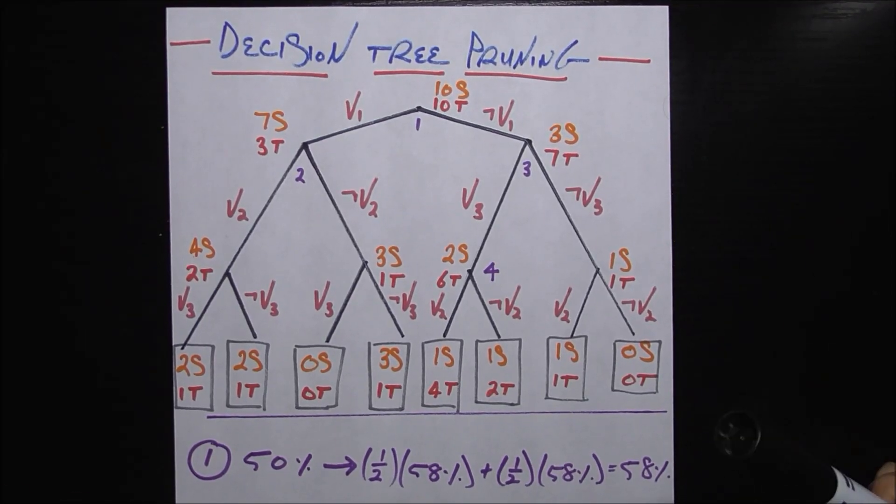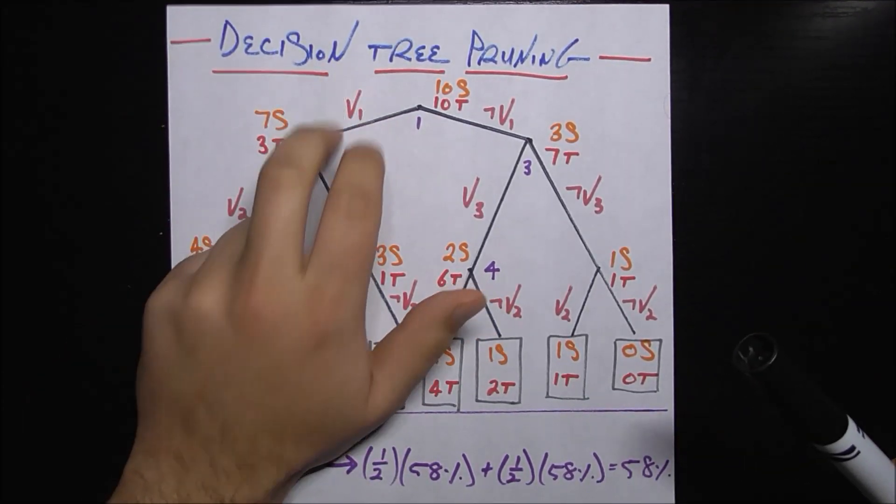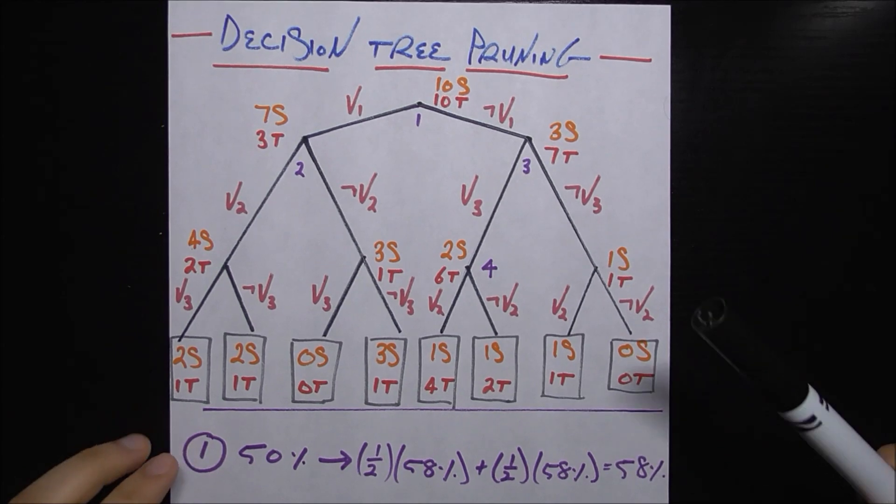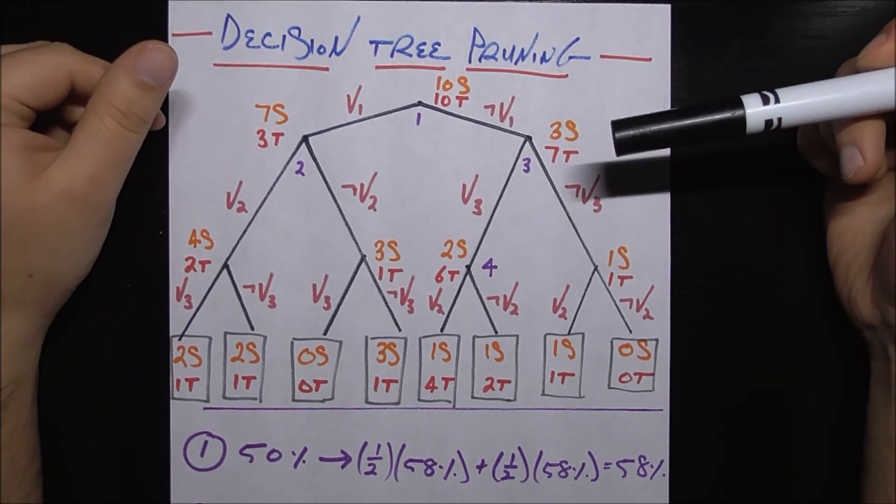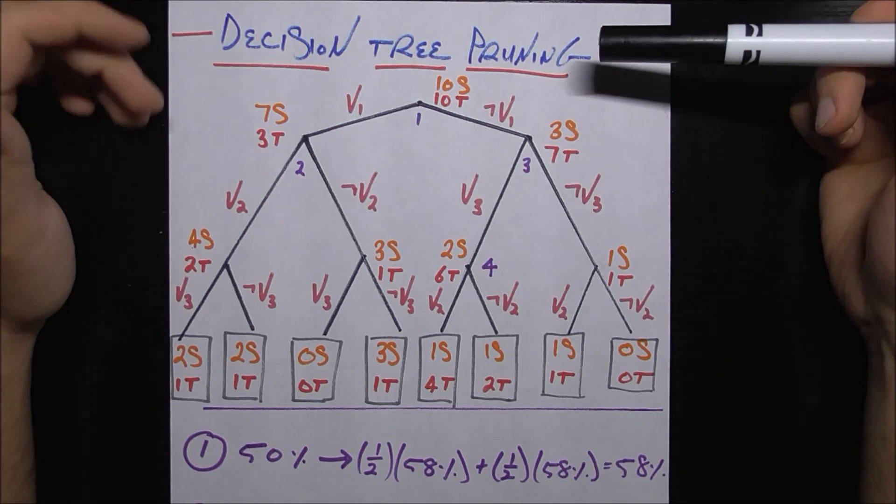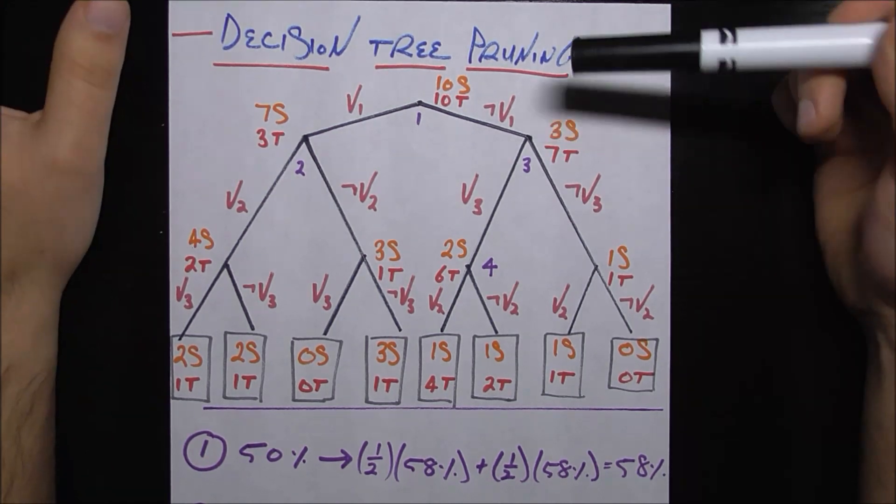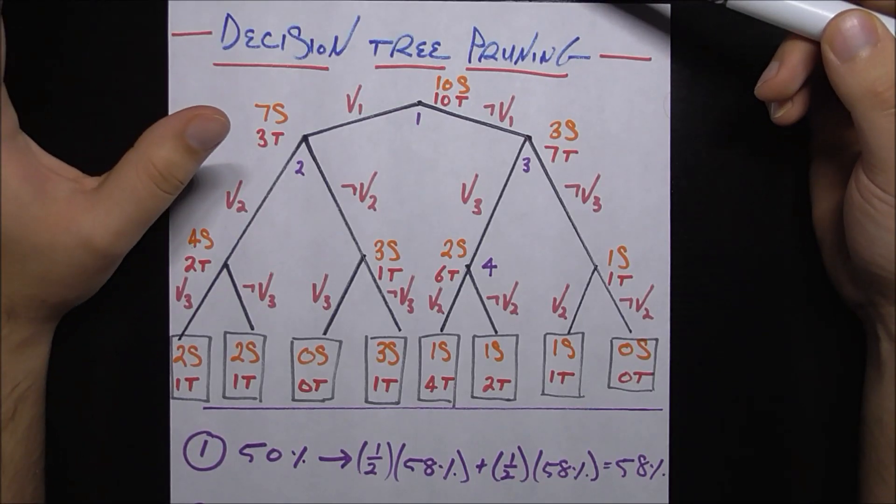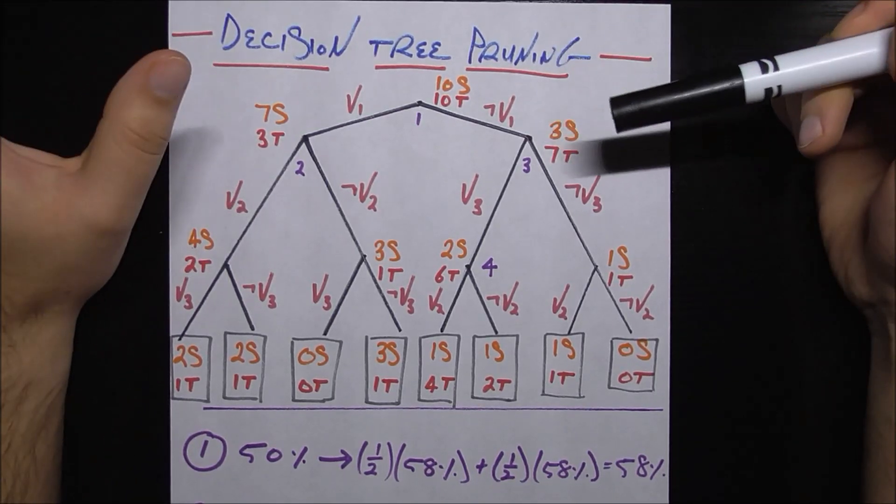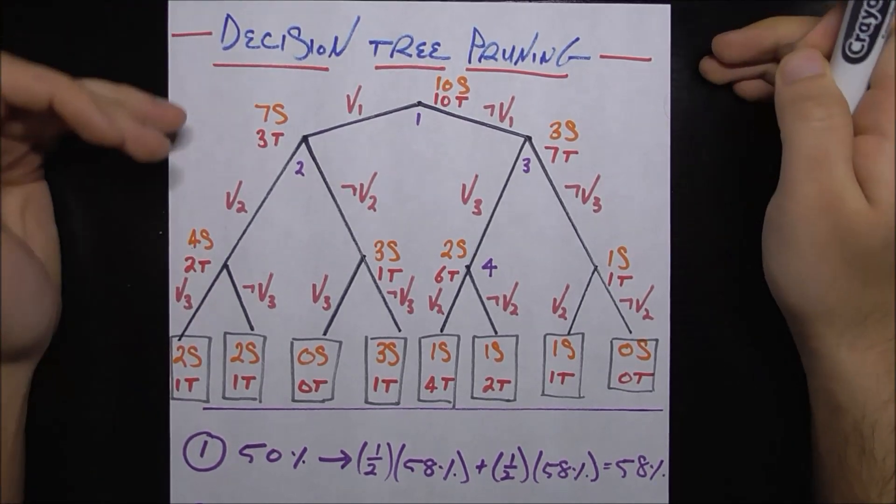In this video, we're going to revisit our good friends' decision trees, and more specifically, we're going to talk about decision tree pruning. At a high level, this is a way to avoid overfitting your decision tree, which means making it way too specific to your training data, so that it's more generalized and more able to deal with your testing data in a more dynamic and robust way. That's a very high-level description.